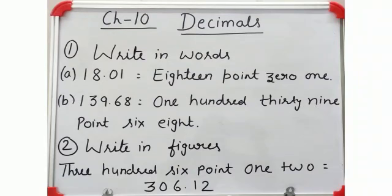Yes, start exercise. Write the decimal numbers in words. Part a: 18.01. 18 is a whole number and 0.01 is a decimal number.